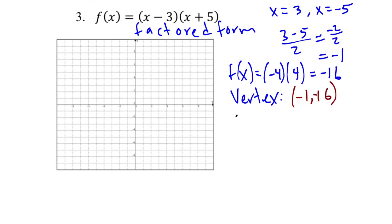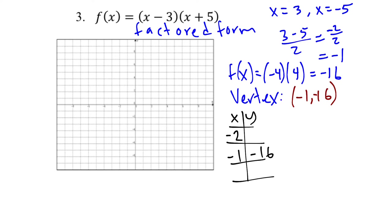Make a table of values with the vertex in the middle — three points is enough. Vertex is (negative 1, negative 16). Choose negative 2 before and 0 after. Plugging in 0: (0 minus 3)(0 plus 5) equals (negative 3)(5) equals negative 15. So the flanking points are (negative 2, negative 15) and (0, negative 15).